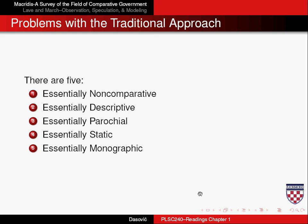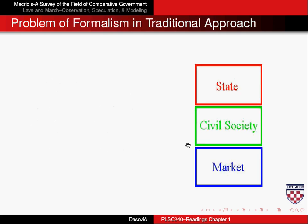I've talked about essentially five problems of the traditional approach. Now, Macried has spent some time talking about the problem of formalism in the traditional approach to comparative politics.